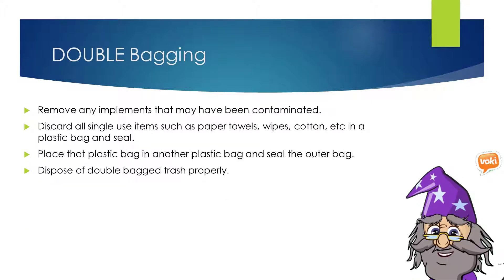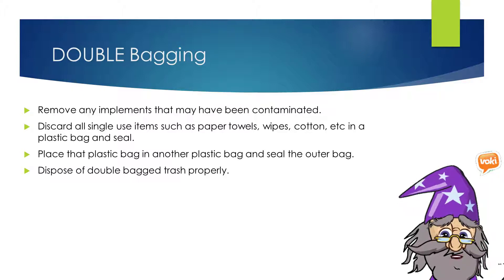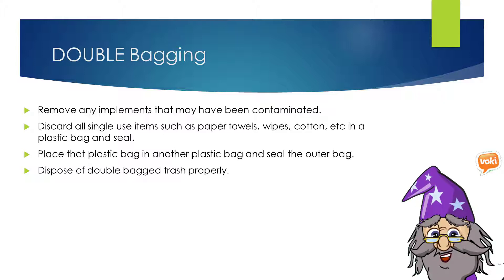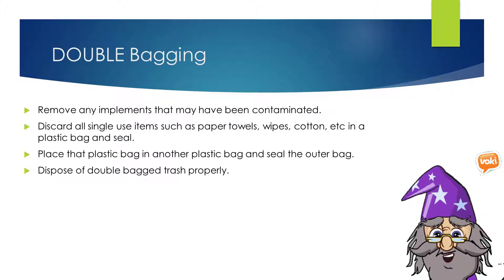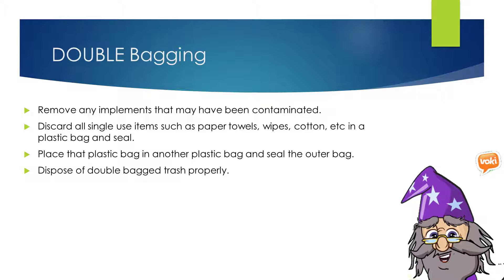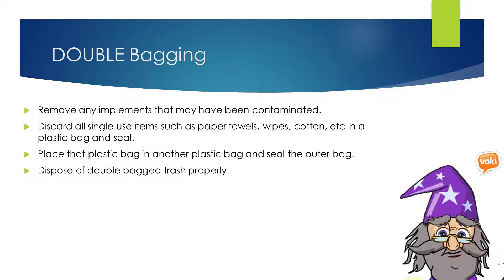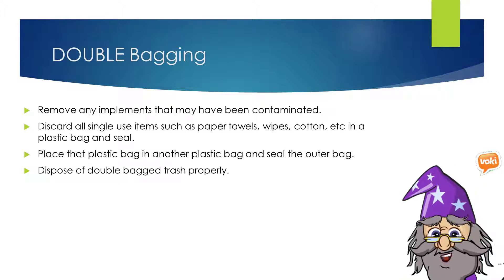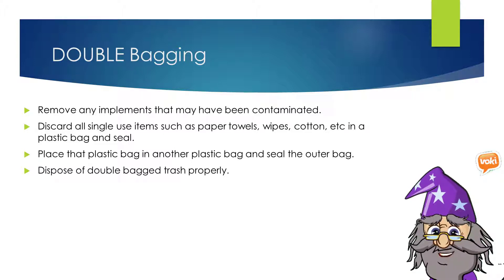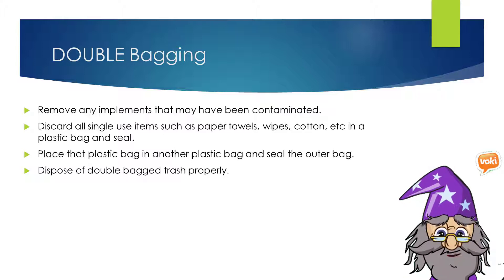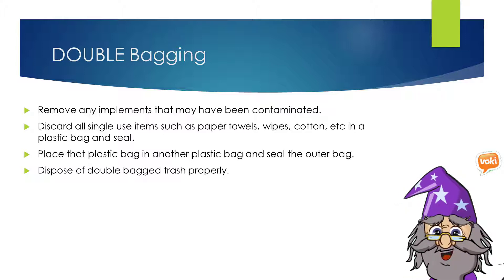If there is an exposure incident, there are protocols that you should follow to ensure that no one else can come into contact with and become infected by someone's blood. One of such protocols is referred to as double bagging. Double bagging means that we should gather up all single-use items that may have come into contact with blood or body fluid and discard them into a sealable plastic bag. Once all items are placed in the bag, we seal it. After that bag has been sealed, we place it into a second bag and seal the outer bag as well.